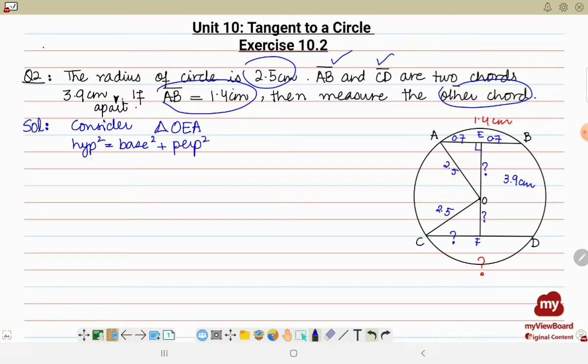So hypotenuse in this case is 2.5 and base is equal to 0.7 and perpendicular we have to find, so it will be OE square. If you solve, OE will come out to be 2.4 centimeter.